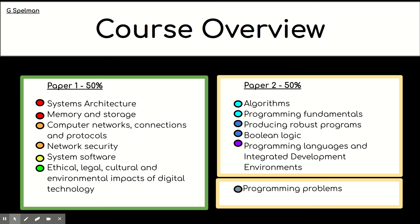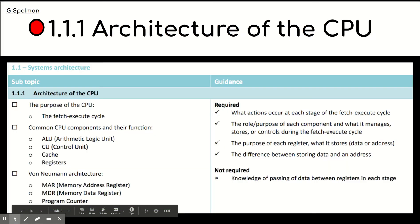Okay, we're going to get started on systems architecture. So systems architecture has got three subtopics and we're starting on the first one which is 1.1.1 architecture of the CPU.